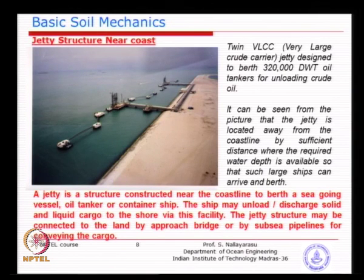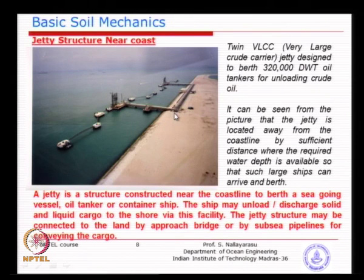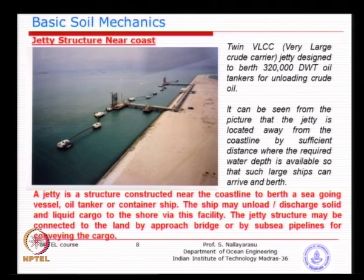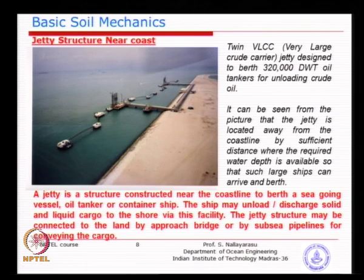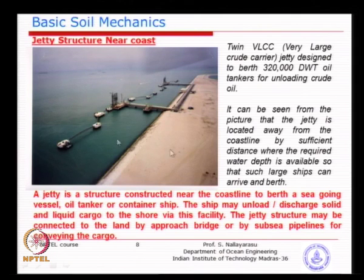One of the jetties built several years back shows two jetties with connectivity to an island. This is where ships come to transfer oil from the ship to shore, which then goes to a refinery slightly away. The water depth is 25 meters - not small. The jetty is constructed slightly away from shore to make sure ships have sufficient depth. You could alternatively construct the jetty very close to the coastline by removing soil through dredging.